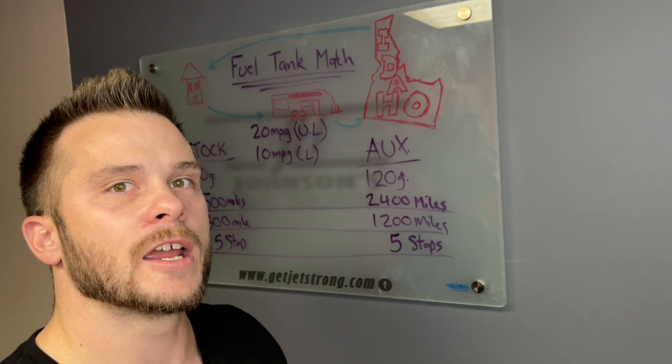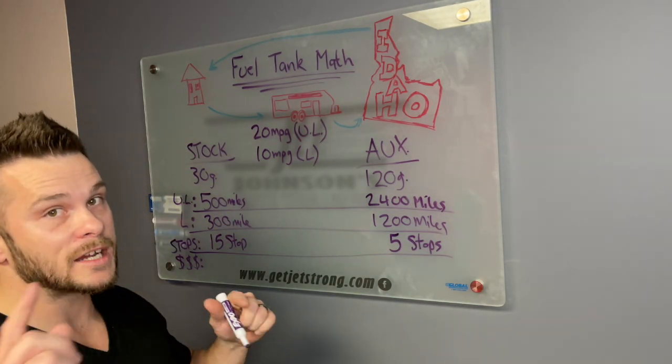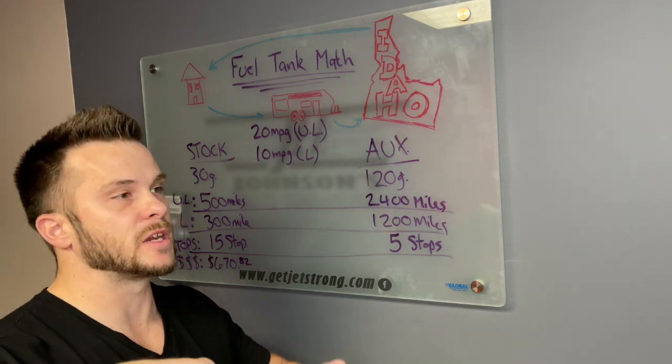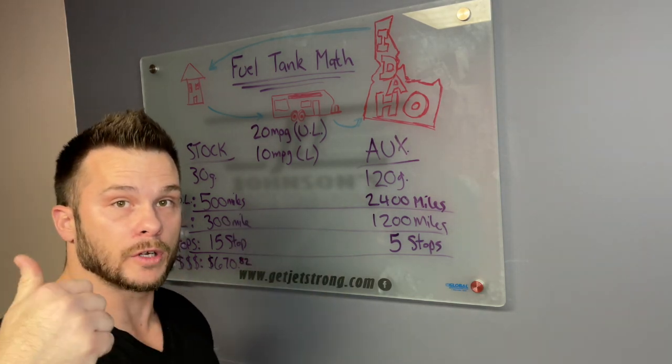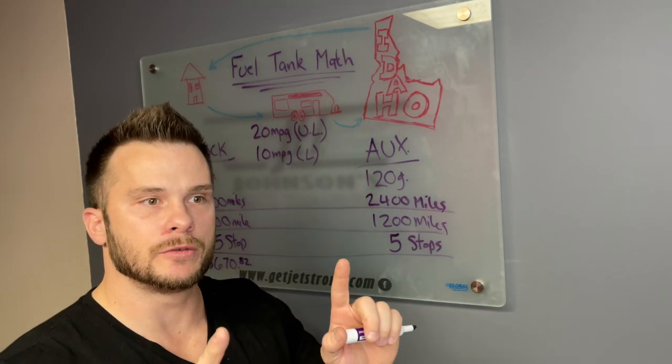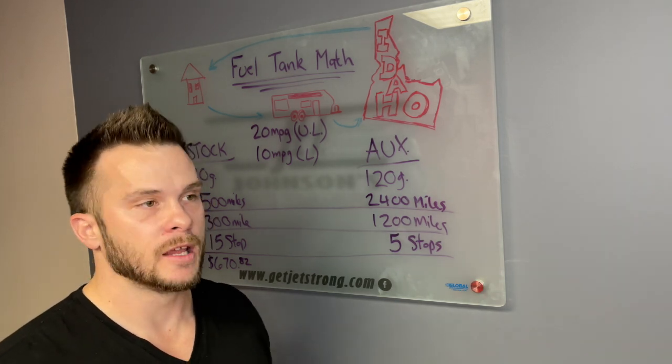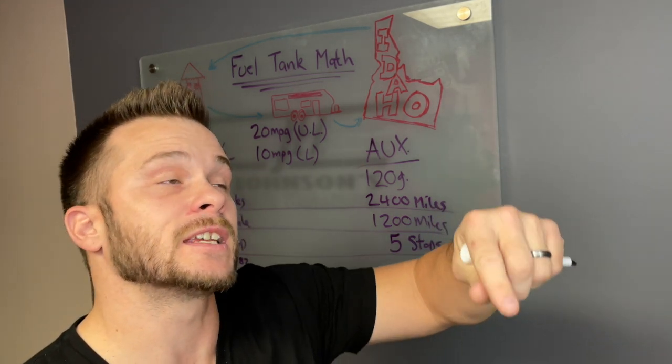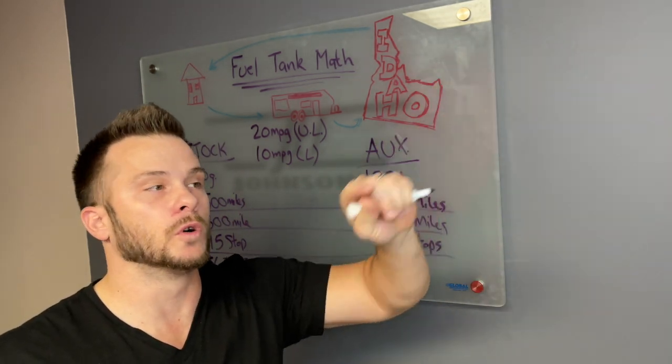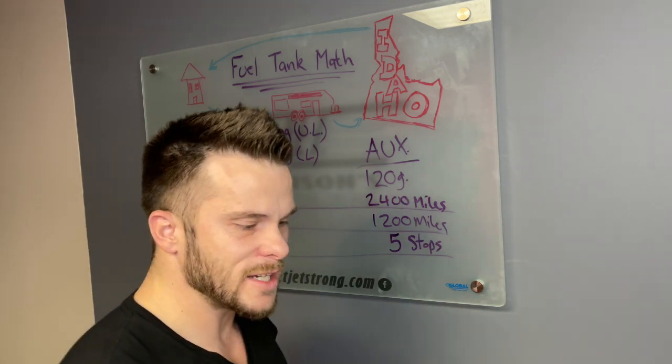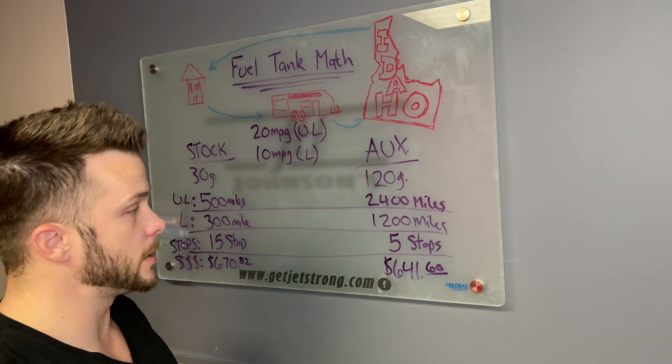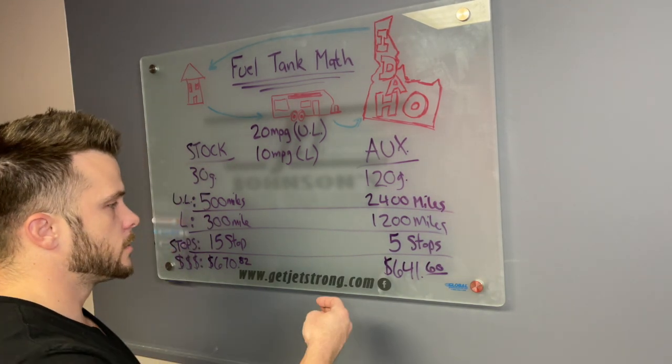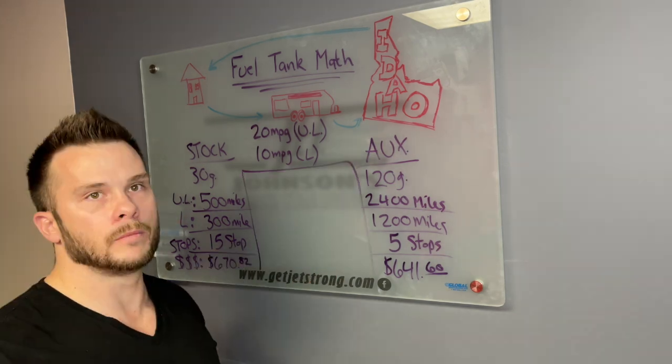This is where it gets really eye-opening in the sense of time is money. Price-wise, with the stock setup we spent $670.82 as prices are currently today. With the auxiliary fuel tank, you're able to be a lot more choosier on where you're fueling up. Using that app to bypass or only put enough in to get to the cheapest fuel on the entire route, we spent $641.60.